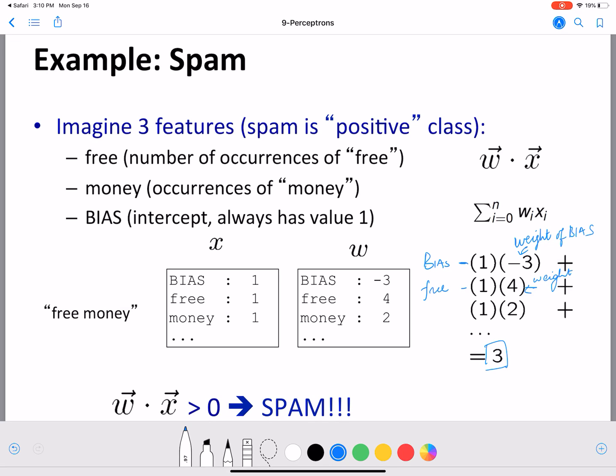If we have minus 3 times 1 plus 4 times 1 plus 2 times 1, that comes out to be 3. Now because it's greater than 0, our prediction is spam. So that's how we predict once we have the weights. We use the weights, then we calculate the value, and if it is greater than 0, we call it the positive class. We predict the negative class otherwise. This is when we have the weights.